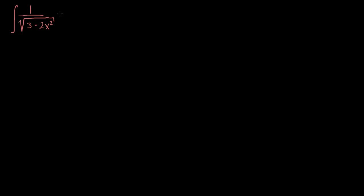Let's say I have the indefinite integral of 1 over the square root of 3 minus 2x squared, dx. Right when I look at that, there's no obvious traditional method of taking this antiderivative. I don't have the derivative of this sitting someplace else in the integral, so I can't do traditional u-substitution.